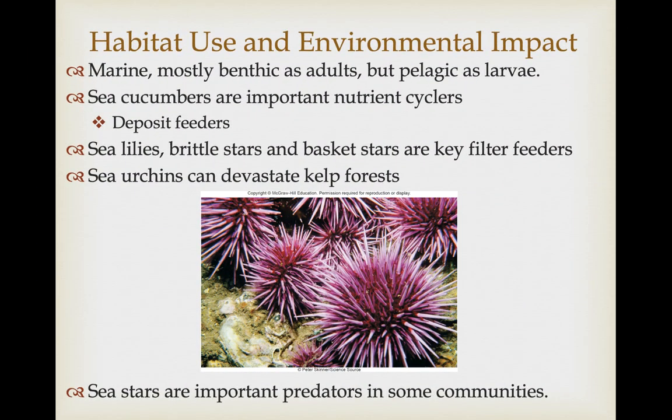Echinoderms are marine, mostly benthic as adults, but their larvae are pelagic and this is the dispersal phase. Sea cucumbers are important nutrient cyclers as deposit feeders, helping to digest food and release nutrients in the benthic environment. Sea lilies, brittle stars, and basket stars are important filter feeders and can be found in dense aggregations, helping to filter water and turn over nutrients. Sea urchins can occur in very dense aggregations and can literally wipe out kelp forests in the Pacific Northwest. Some sea stars are important predators on annelids and mollusks despite being slow.